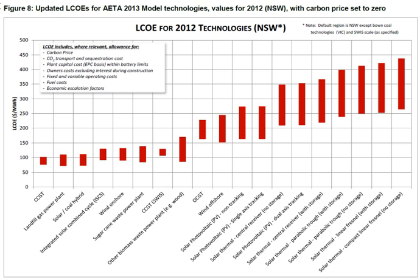Typically the LCOE is calculated over the design lifetime of a plant, which is usually 20 to 40 years, and given in the units of currency per kilowatt-hour or megawatt-hour — for example AUD per kilowatt-hour or per megawatt-hour. Care should be taken in comparing different LCOE studies and their sources, as the LCOE for a given energy source is highly dependent on the assumptions, financing terms, and technological deployment analysed.